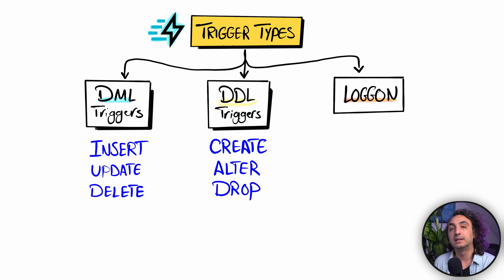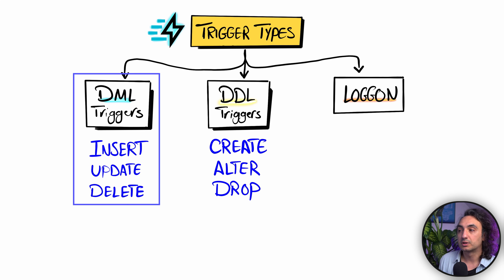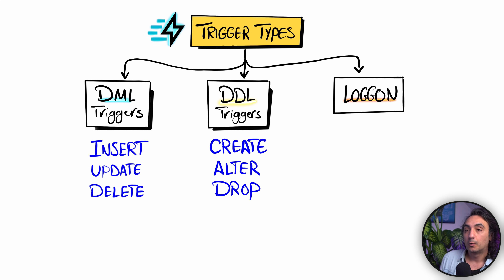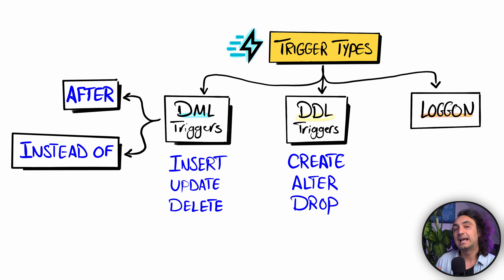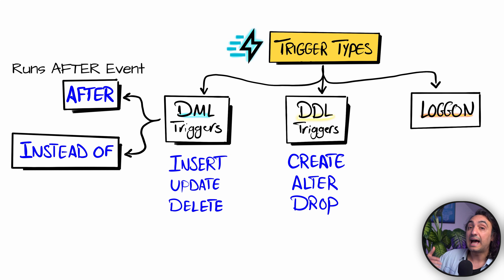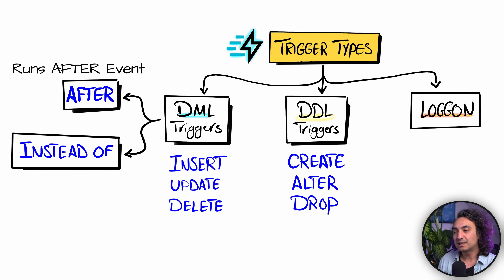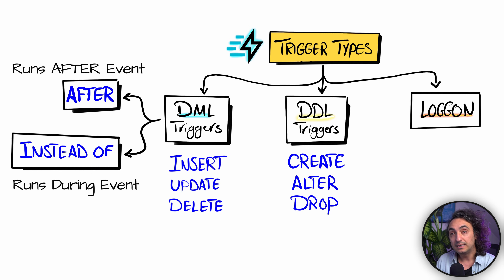In this tutorial we're going to focus on DML triggers — insert, update, delete. For DML triggers we have two types: after triggers and instead-of triggers. As the name suggests, 'after' means it can be executed after the event. 'Instead of' means the trigger can be executed during the event, not after it.